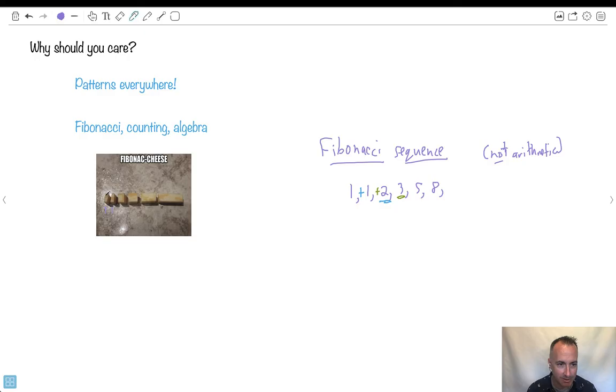This is a 1. This is a 1. Well, 1 plus 1 equals 2. Look, they made it in cheese. Look, it's twice as long. And 1 plus 2, look, this is 3 units long. And 2 plus 3 equals 5. 3 plus 5 equals 8.